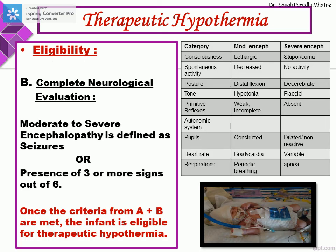Category B requires a complete neurological evaluation. Moderate to severe encephalopathy is defined as seizure, or presence of 3 or more of 6 signs: consciousness — lethargy; decreased spontaneous activity; distal flexion posture; hypotonia; weak or incomplete primitive reflexes; and autonomic signs — constricted pupils, bradycardia, and periodic breathing. If there is a seizure, the baby is immediately eligible. If no seizures, 3 out of 6 signs must be present. Once criteria from A plus B are met, the infant is eligible for therapeutic hypothermia.